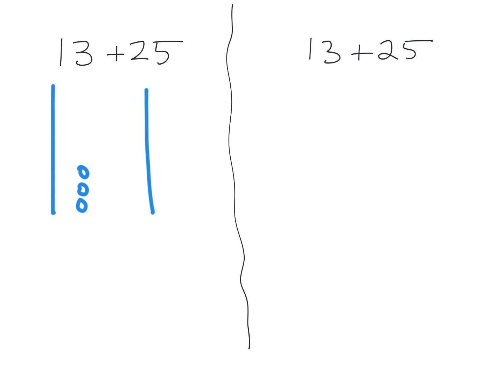Now I'm going to model 25. So there's 10, 20, and then 1, 2, 3, 4, 5. So what I've done is I've essentially, by drawing these quick tens and ones, I've essentially decomposed 13 into a 10 and three ones. And I've decomposed 25 into two tens and five ones.